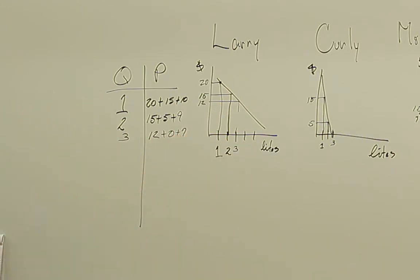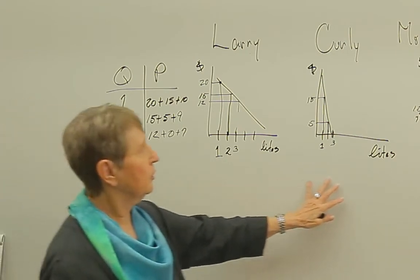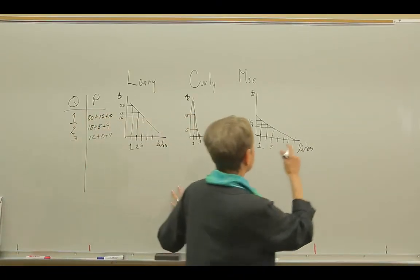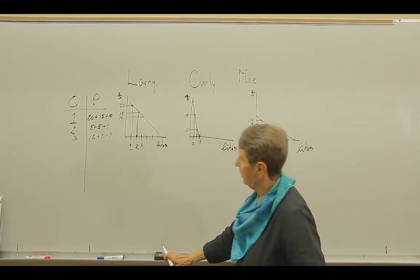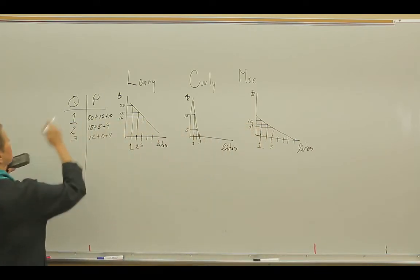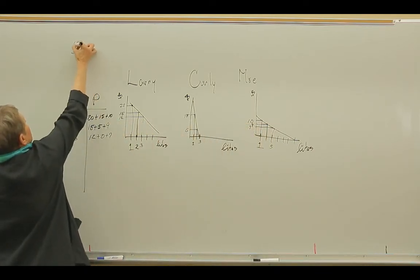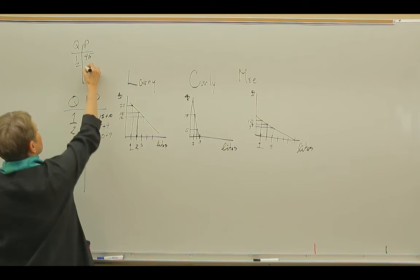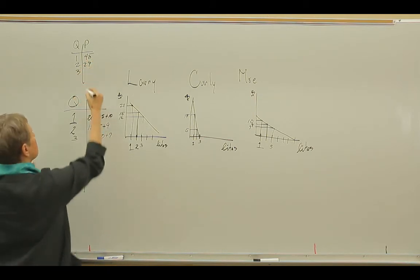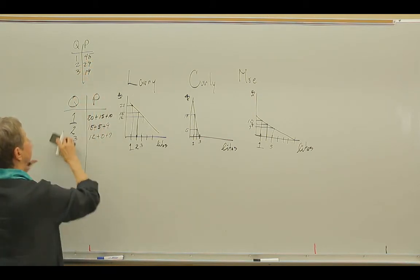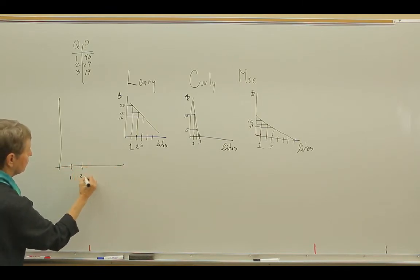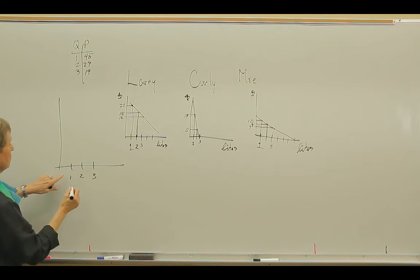So that's how we construct a market demand curve for a public good. And then the question becomes, where will I draw my market demand? Let me do this. Street light number one was $45. Street light number two was $29. Street light number three is $19. So I'm going to draw our market demand curve. One, two, three. And you see what we've done.